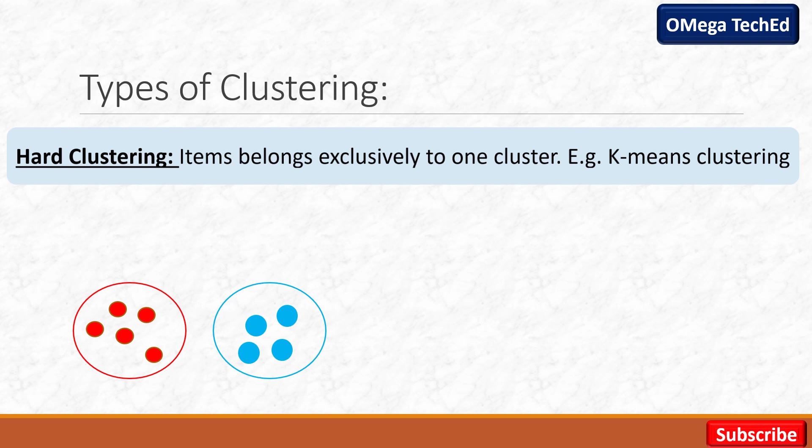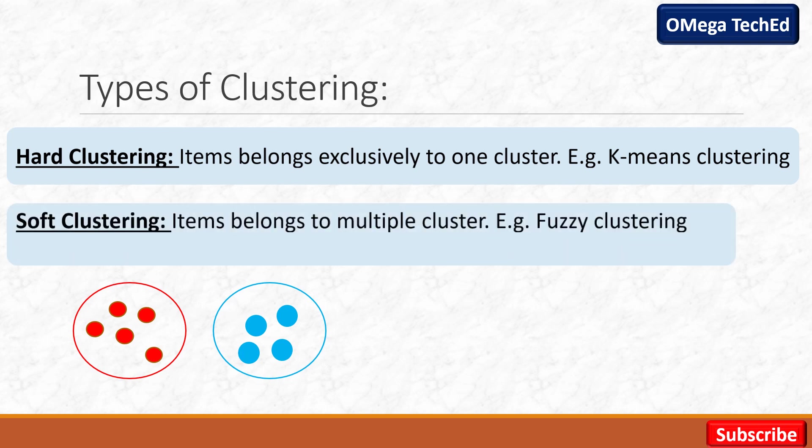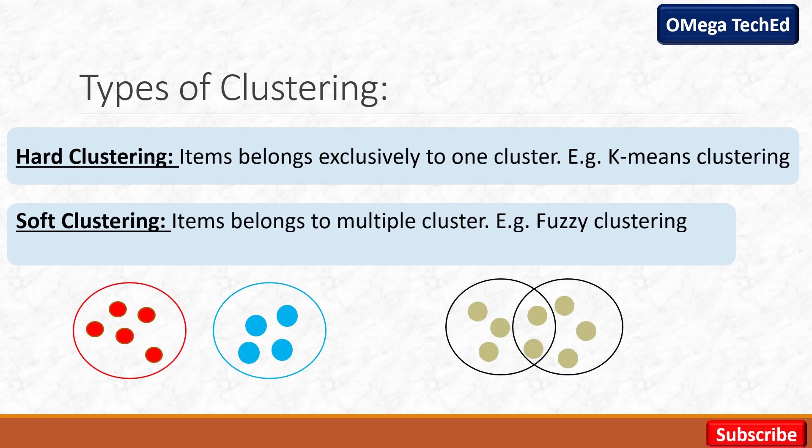Next type جو ہمارے پاس clustering کا ہے وہ ہے soft clustering جسے ہم loose clustering بھی کہتے ہیں۔ اس میں جو items ہوتے ہیں وہ ایک سے زیادہ cluster کو بھی belong کر سکتے ہیں۔ For example, fuzzy clustering۔ یہاں جیسے diagram میں دیکھ رہے ہیں کہ دو cluster دیئے ہوئے ہیں لیکن کچھ data points دونوں clustering میں belong کر رہے ہیں۔